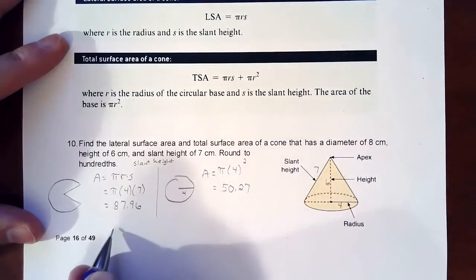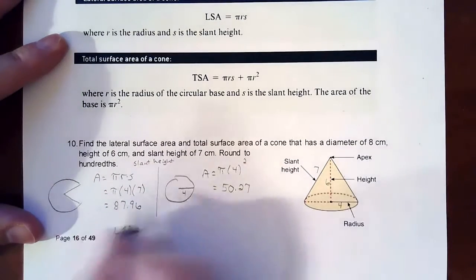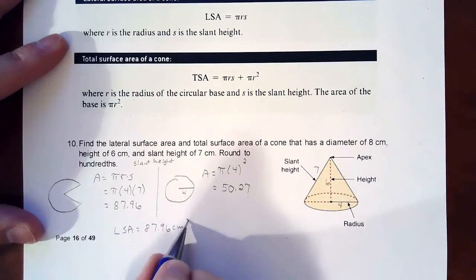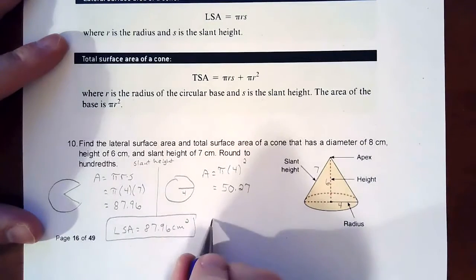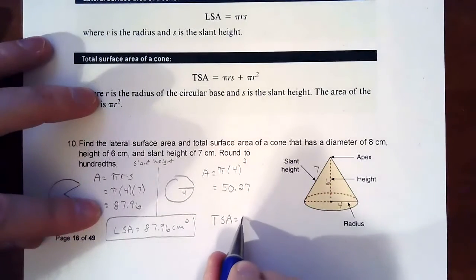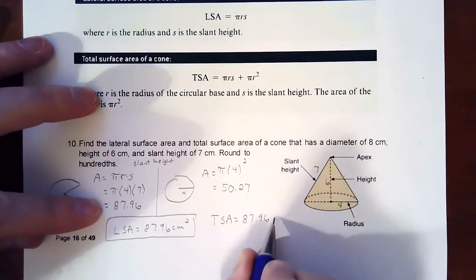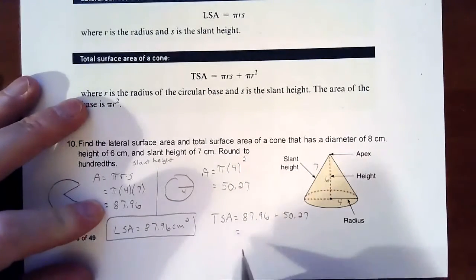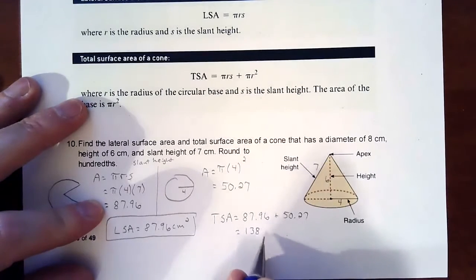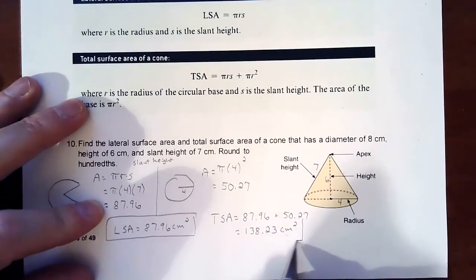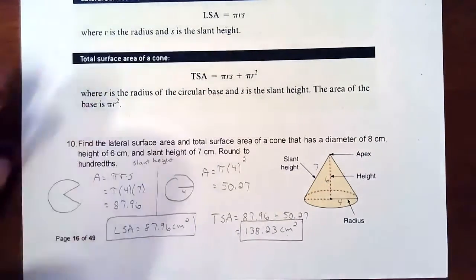So the lateral surface area is the Pac-Man shape, the piece sticking up, and that is 87.96 centimeters squared. Your total surface area is the combination of the two: 87.96 plus 50.27, which adds up to make 138.23 centimeters squared.